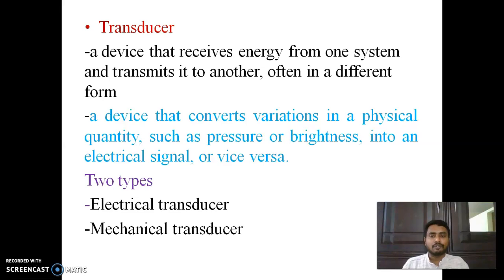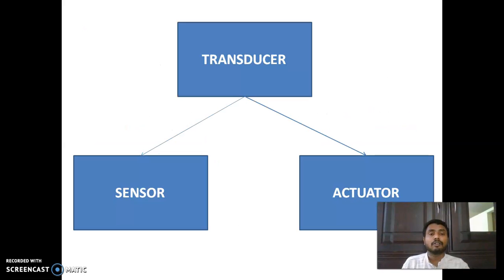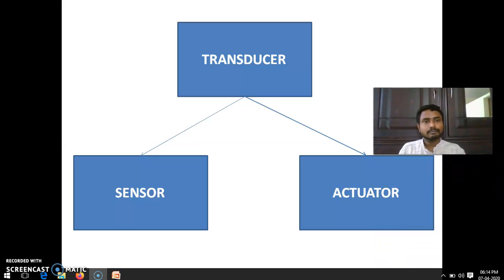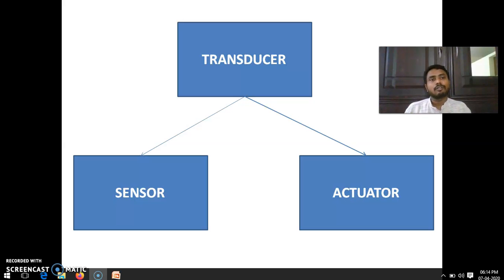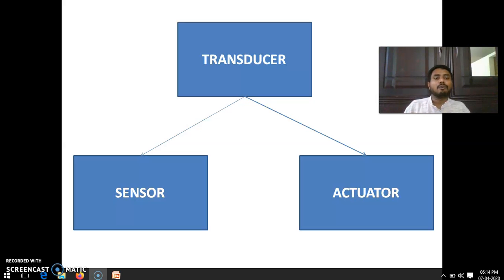We are mainly focusing on electrical transducers — both electrical and mechanical transducers exist, but we focus on electrical. Transducers are classified into sensors and actuators. This classification is exactly applicable for electronics instrumentation and robotics. Sensors are the transducers we use at the input stage, while actuators are the transducers we use at the output stage. Sensors receive physical quantity or physical energy and convert it into an electrical signal, whereas actuators receive the electrical signal and convert it into mechanical motion or other forms of energy.